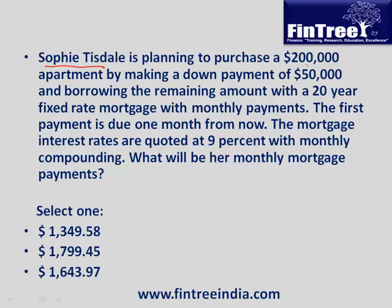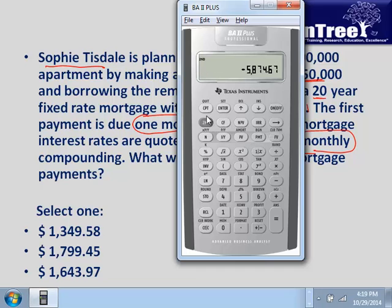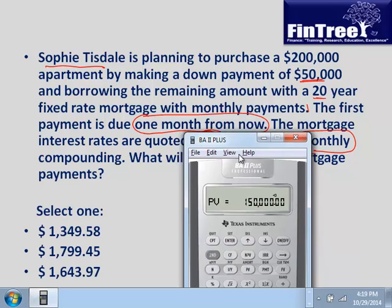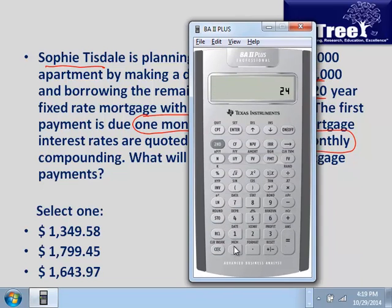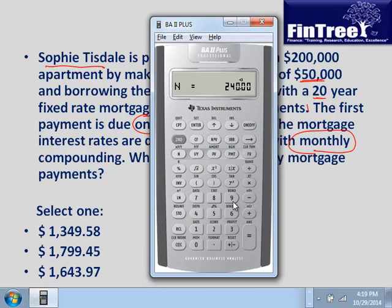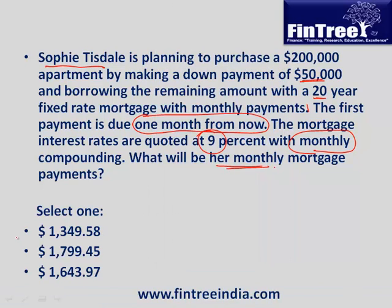Sophie Tisdale is purchasing a $200,000 apartment with a $50,000 down payment and borrowing the remaining $150,000 with a 20-year fixed-rate mortgage with monthly payments. The first payment is due one month from now. Mortgage interest rates are quoted at 9% with monthly compounding. PV is $150,000, N is 240 (20 years times 12), IY is 9 divided by 12, compute payment — the monthly mortgage payment is $1,349.